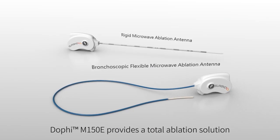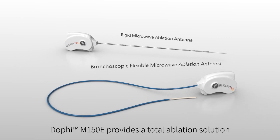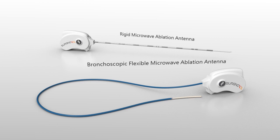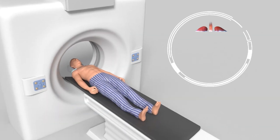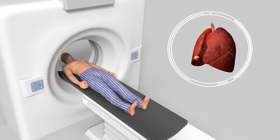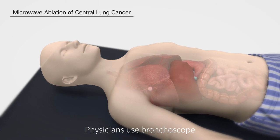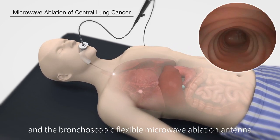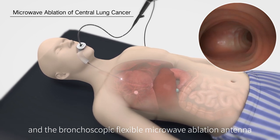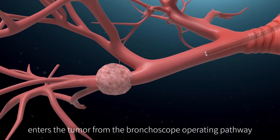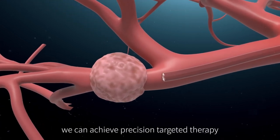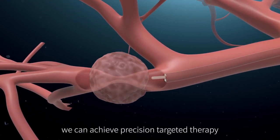Delphi M150E provides a total ablation solution for central lung cancer and peripheral lung cancer treatment. Physicians use bronchoscope to determine the exact location of the tumor, and the bronchoscopic flexible microwave ablation antenna enters the tumor from the bronchoscope operating pathway. In this way, we can achieve precision-targeted therapy.